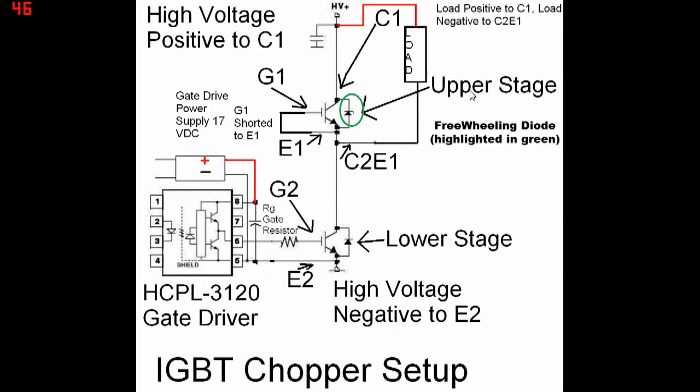When the IGBT switch is off, if we didn't have the freewheeling diode, the load's inductance would attempt to discharge through the IGBT, creating a very high voltage spike. So, when the load is switched off, when the IGBT switches off, the diode catches the load, or clamps the load's inductance, so that the IGBT won't experience a very high voltage spike.